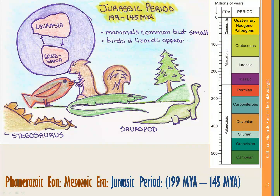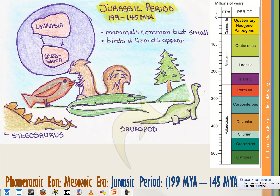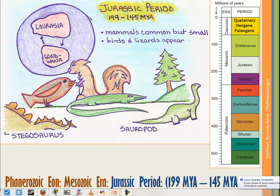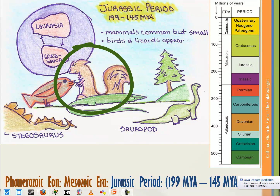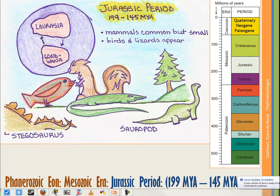Then we move into the Jurassic Period, covering about 199 million years ago to 145 million years ago. Here we see a whole lot of gymnosperms and ferns, and some of our favorite dinosaurs — the sauropods and the stegosaurus. Mammals are very common but very small, rodent-like, closer to squirrels and rats than anything big. We see the very first birds appear, and the very first lizards appear.